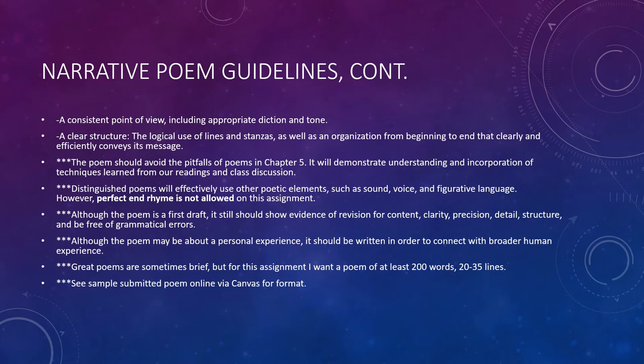Other details about this assignment: include a consistent point of view — just like in a good story, a narrative poem will have a consistent perspective. For instance, if the speaker is in first person, stick with that throughout. A clear structure using a logical use of lines and stanzas is the additional element on top of story writing. The content — the story — is what gets you to a B, but the logical use of lines and stanzas is what pushes you to an A. The poem should also avoid the pitfalls of poems discussed in Chapter 5, which I'll talk about in the section on awful poems.